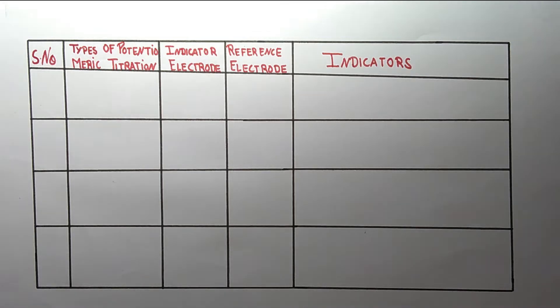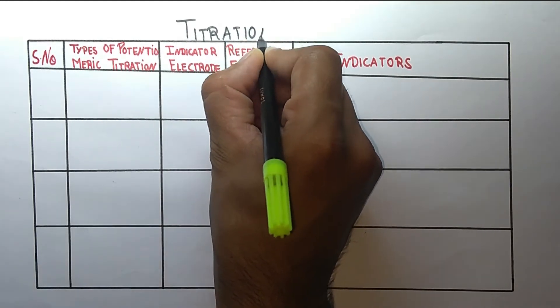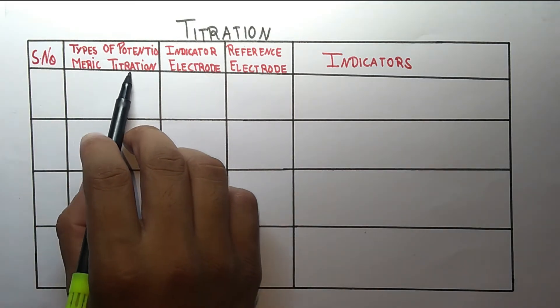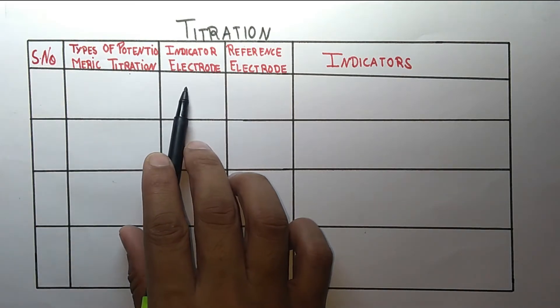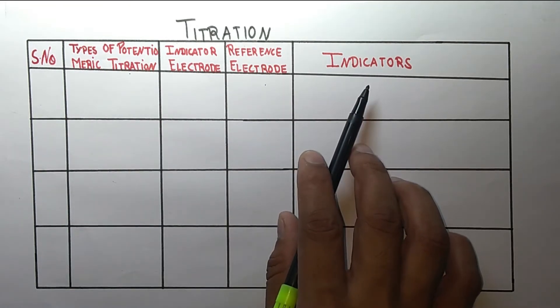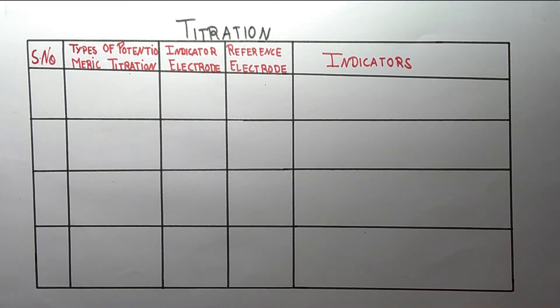Hello students, welcome to the channel Pharma4U. Today in this video we are going to talk about the types of titration, specifically the types of potentiometric titration and their indicator electrode, reference electrode, and what indicators are used in particular types of titration.